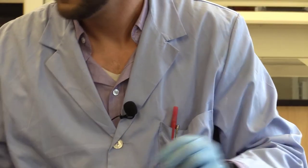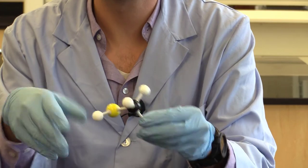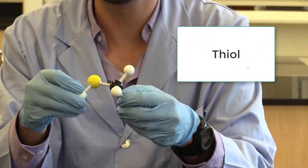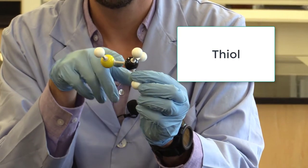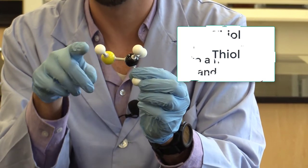Now we get into some sulfur functional groups. This is a thiol. So for our thiol we have a sulfur bonded to a carbon and then also bonded to a hydrogen.